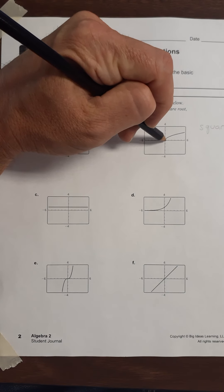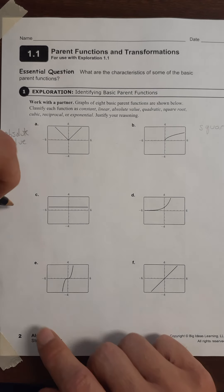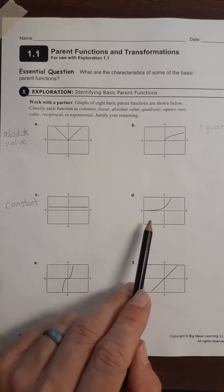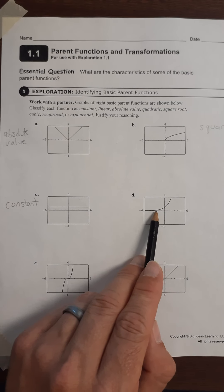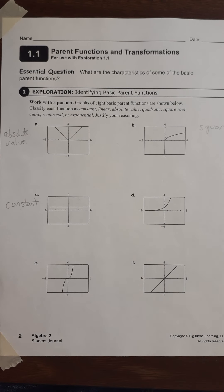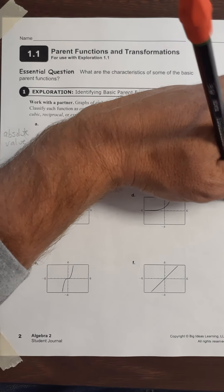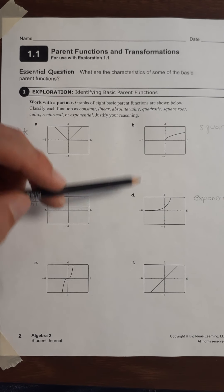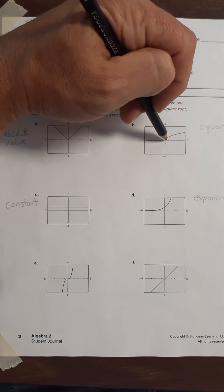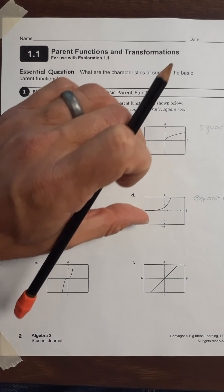Notice that the square root does not go forever in each direction. For part C, you just see a flat horizontal line — when you see that, you know you're looking at a constant function. Going on to part D, it starts out very, very slowly — kind of the opposite of the square root — and then it starts going up very fast, or maybe going down very fast. When you see that, you are looking at an exponential function. The exponential keeps going in both directions forever, whereas the square root stops at one end — that's how you can identify the difference between the two.